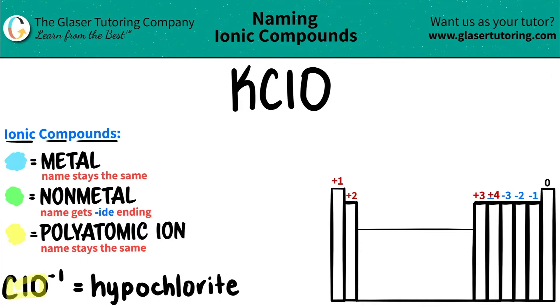ClO always has a negative one charge, and this polyatomic is called hypochlorite. Here's the polyatomic: ClO. I identified this whole thing, so now the only thing left is to identify the potassium.